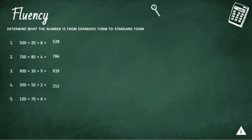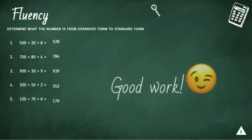And number 5. 100 plus 70 plus 6 equals 176. Good work.